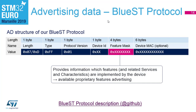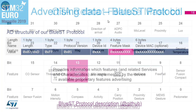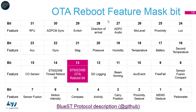Regarding advertising, OTA capability is also advertised using a special proprietary advertising structure described in the ST BLE BlueST protocol. This includes a feature mask with bit fields related to sensors, and most importantly the OTA reboot bit — so the phone immediately knows from the advertising content that this device is capable of OTA.